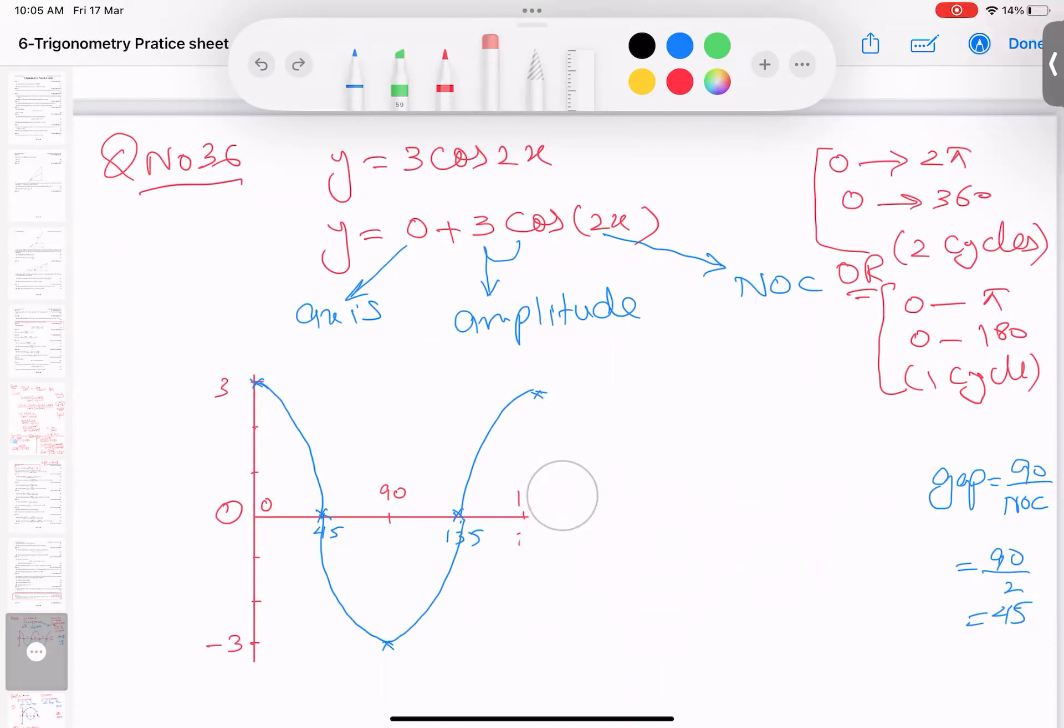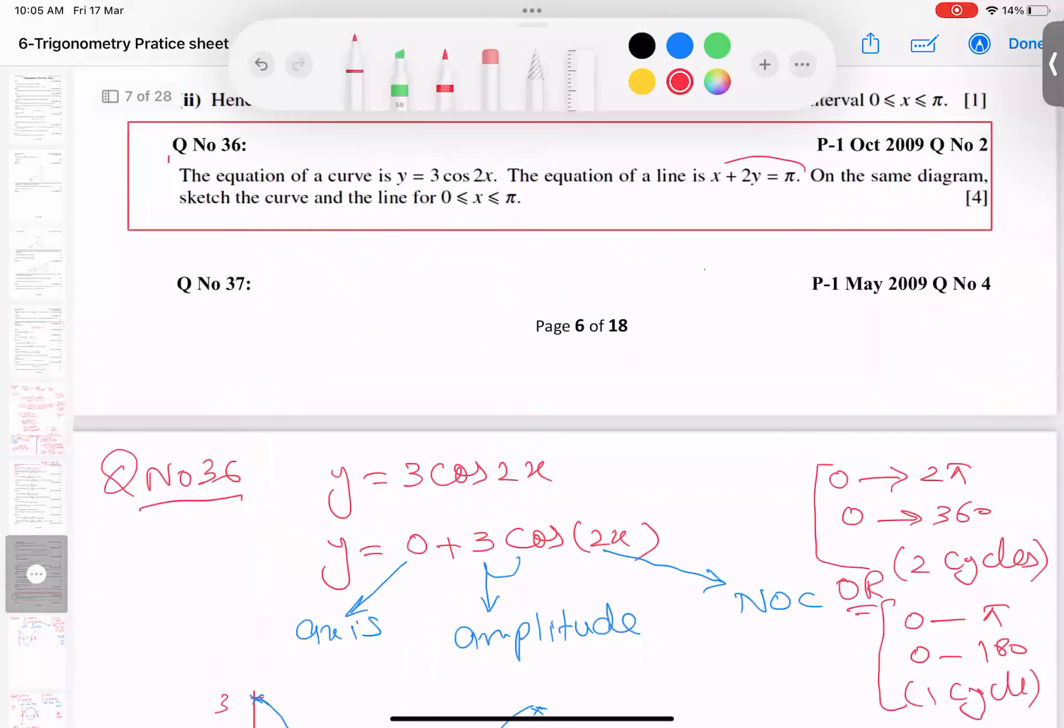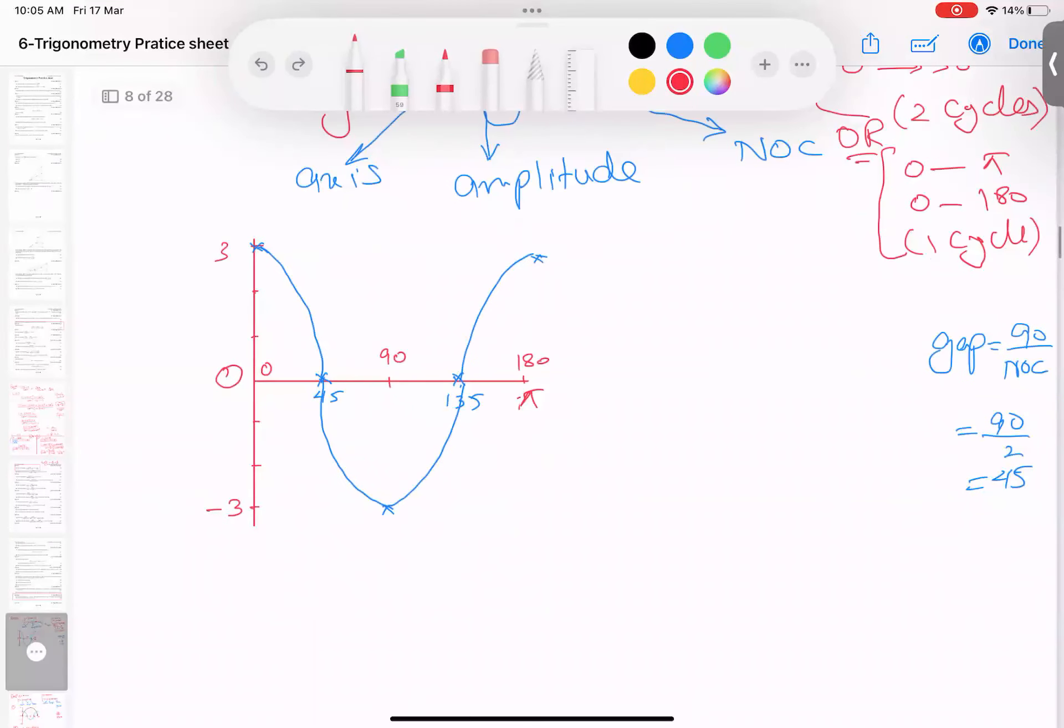I write again. This is 180 degree or π. So alhamdulillah rabbil alameen, first part is over. At the same time, he's saying that you have to sketch this line as well. So x plus 2y equal to π.